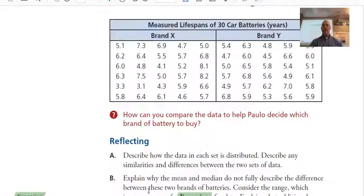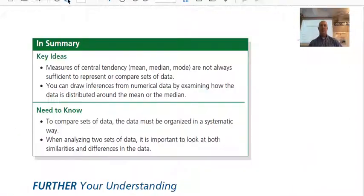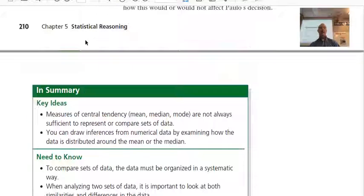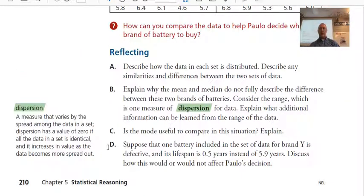Okay. Let's go back to the textbook here, and we'll look at the summary. Oh, actually, I should just note this one thing. I don't know how many of you looked at D. If we had a battery in brand Y that was defective, and its lifespan was 0.5 years instead of 5.9, would this affect your advice to Paolo or not? Anybody think about that reflection question there?